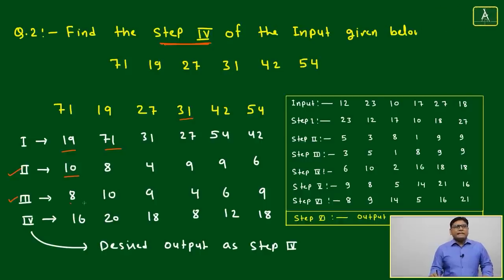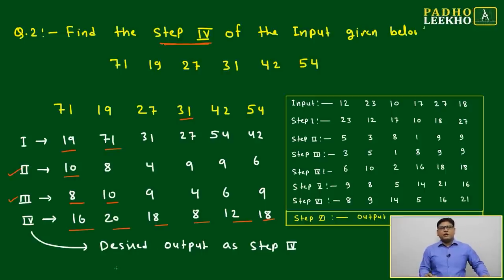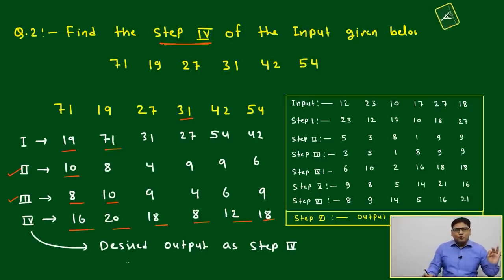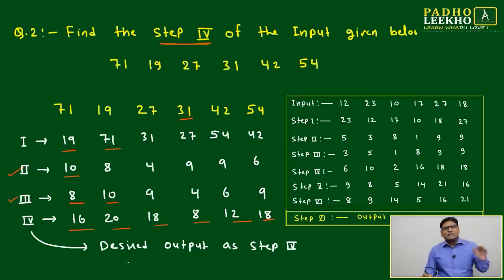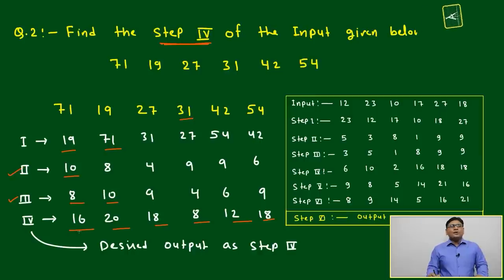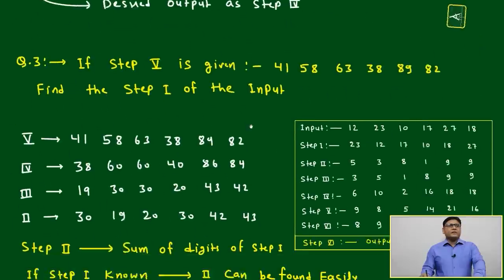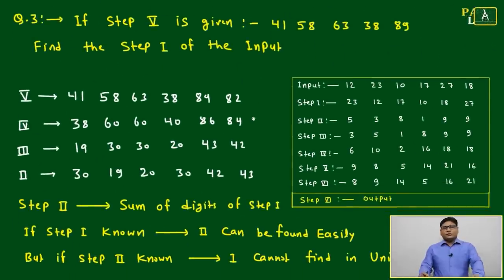Continuing Step 4, we double the numbers. After these four steps, the input converts to 16, 20, 18, 8, 12, and 18. That is the desired arrangement after Step 4.